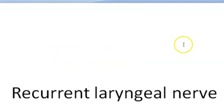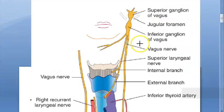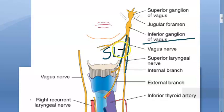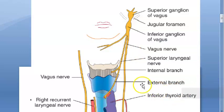In this video we want to look at the recurrent laryngeal nerve. From the inferior ganglion of vagus, two things arise: the vagus nerve and the superior laryngeal nerve. So the two nerves that supply the larynx are the superior laryngeal nerve and the recurrent laryngeal nerve. The recurrent laryngeal nerve comes from the vagus nerve, which just came out of the inferior ganglion of vagus.